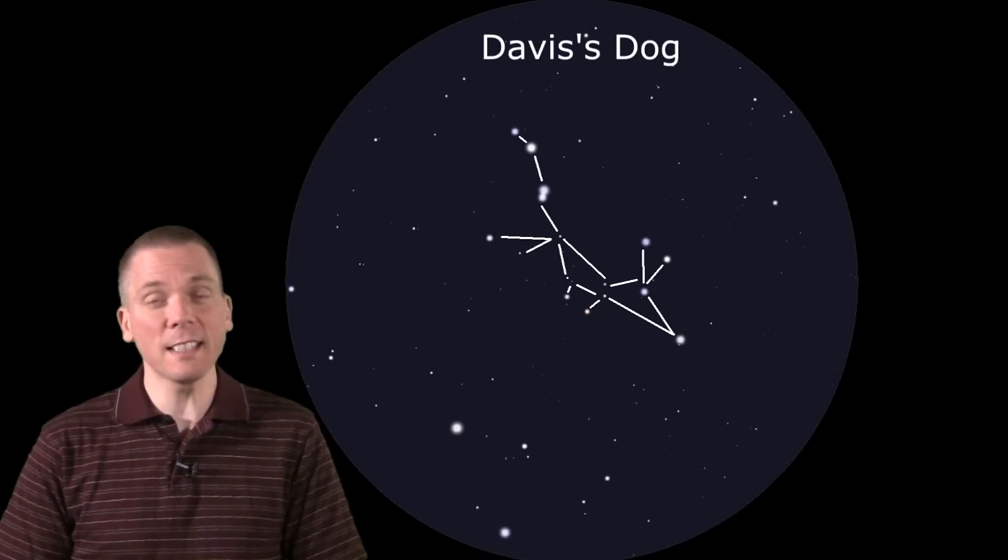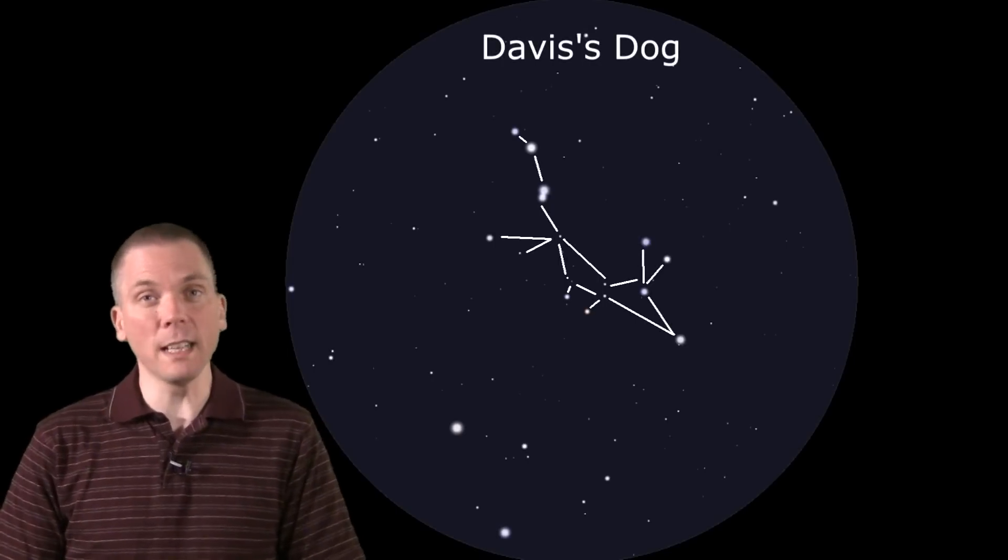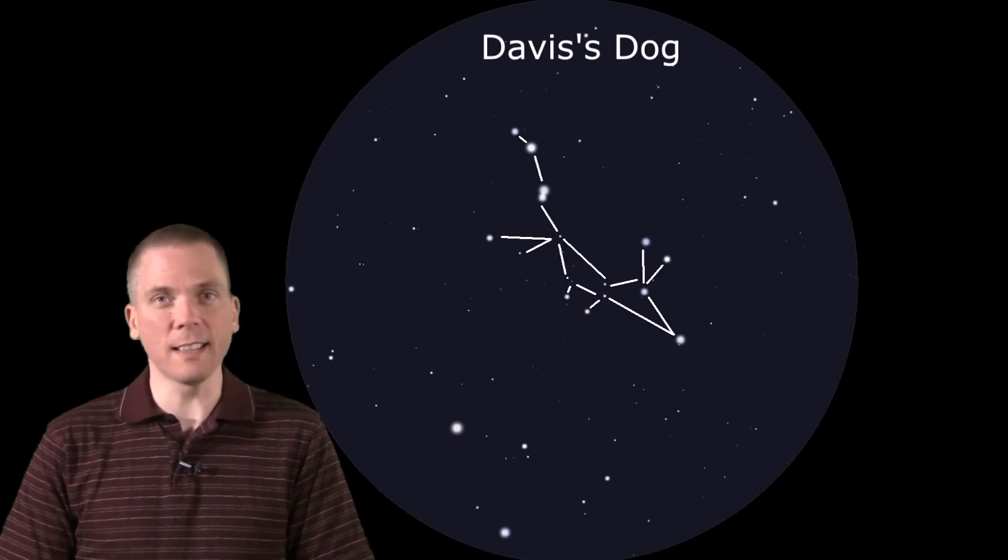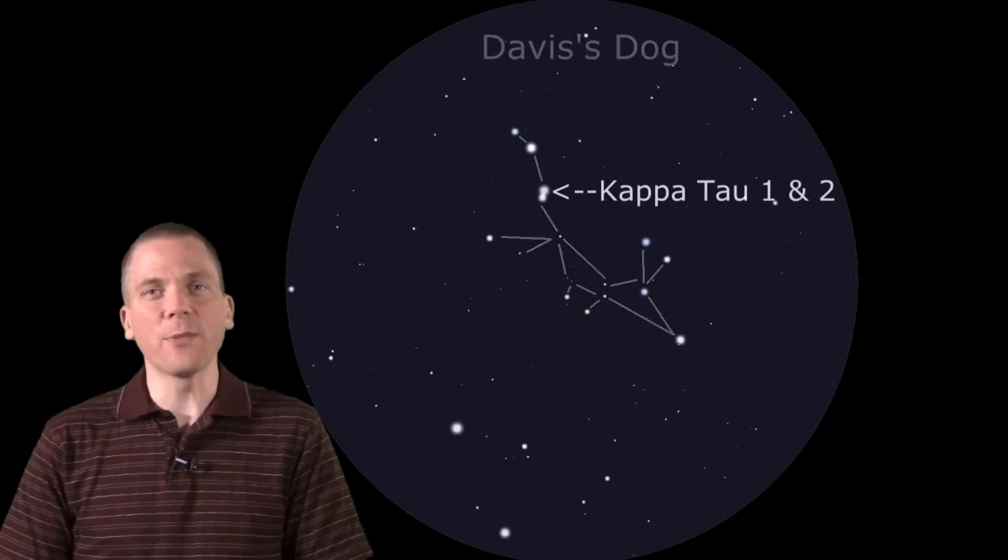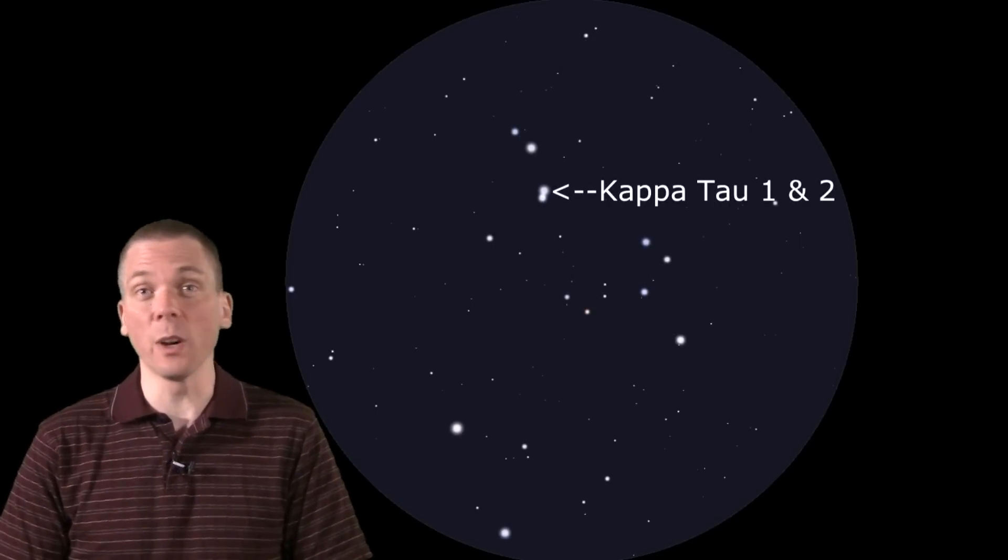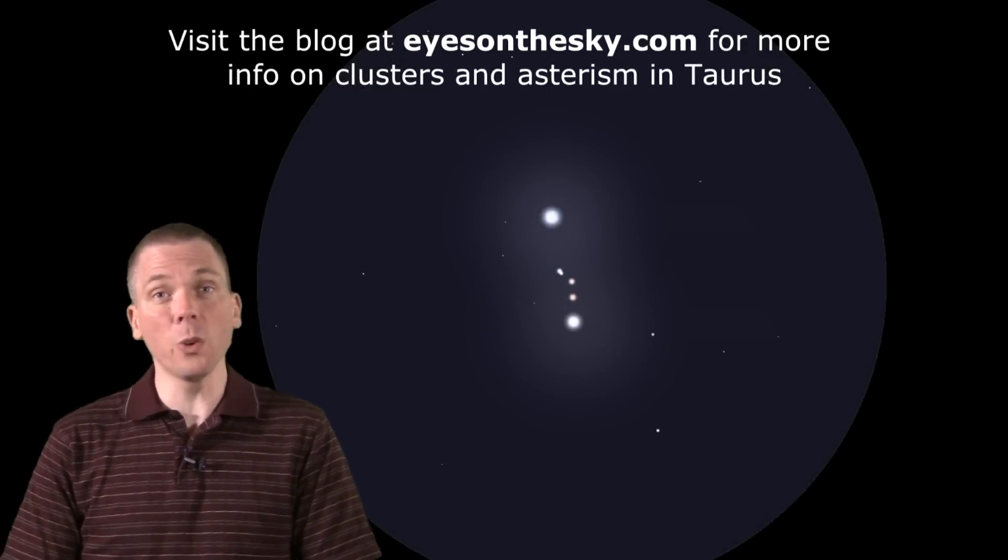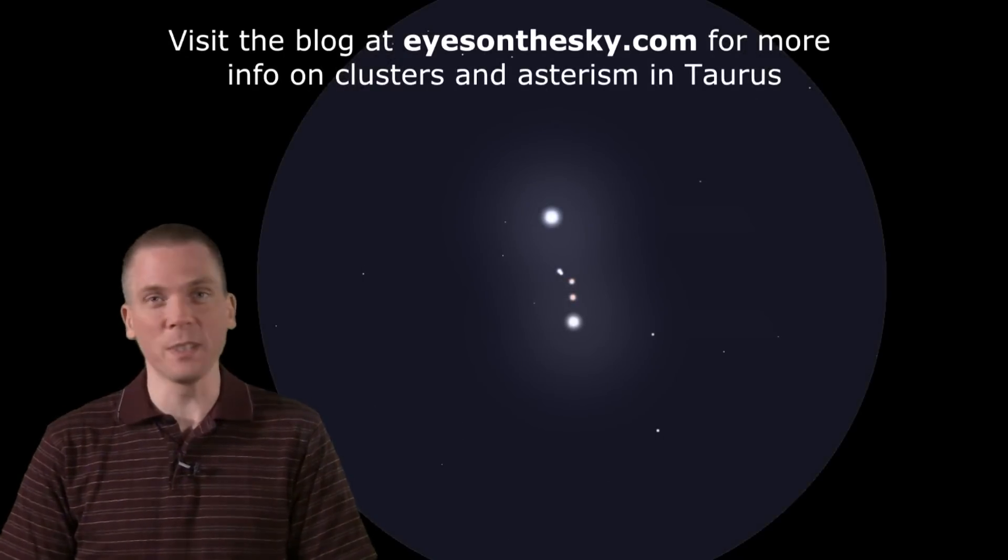Amateur astronomer John Davis noticed this, and it has been informally dubbed Davis's Dog since then. If nothing else, use that to find Kappa-1 and 2 Tauri, a very wide binocular double star, which has some close and quite dim stars in between them that require a telescope to see.